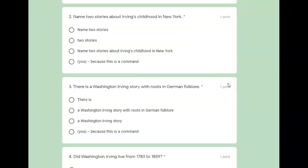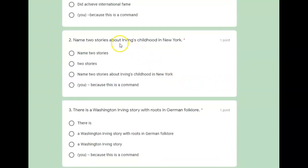Let's look at number two. Name two stories about Irving's childhood in New York. And again, we're looking for the complete subject. So who or what is this sentence about? Well, it talks about Irving's childhood, but it's kind of at the end of the sentence. Is this a command? Name two stories about Irving's childhood? Yes, it's telling whoever's reading this to do something. So the subject is you. It's a command.